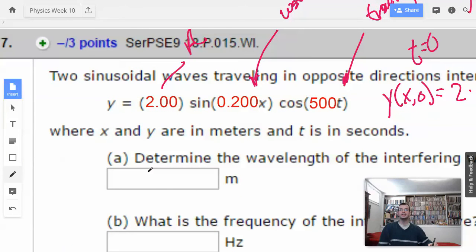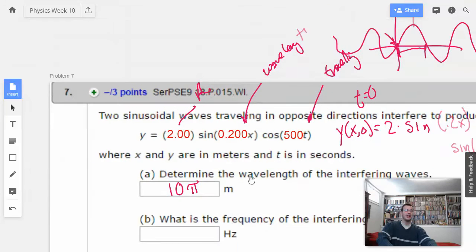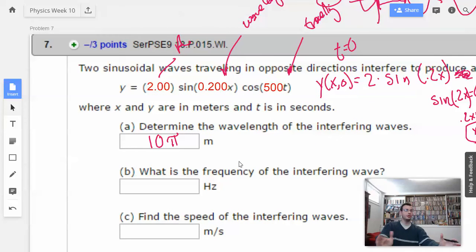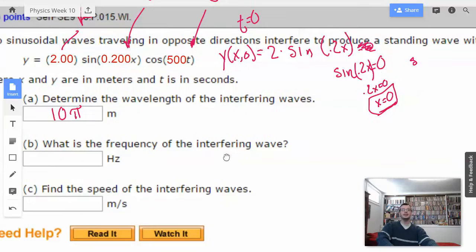Determine the wavelength of the interfering waves: 10 pi, or 31.4 meters. I don't like how that's written, so I'll just go ahead and think you probably actually have to write it out, 31.415 type thing. What is the frequency of the interfering wave?